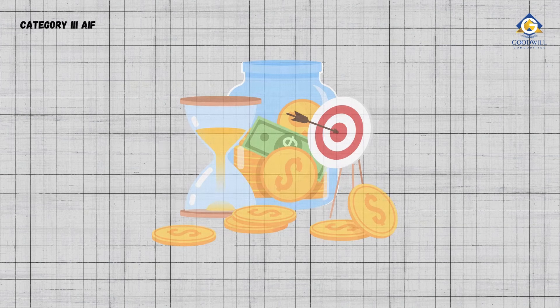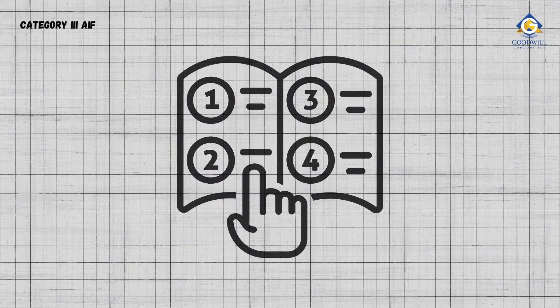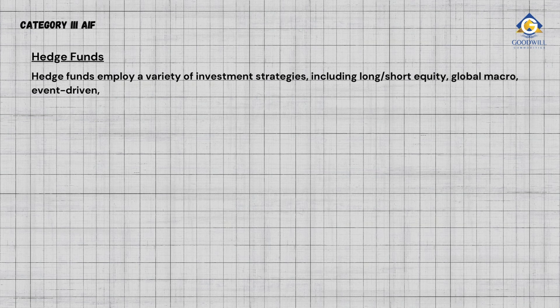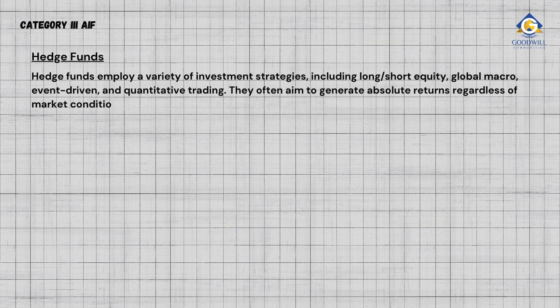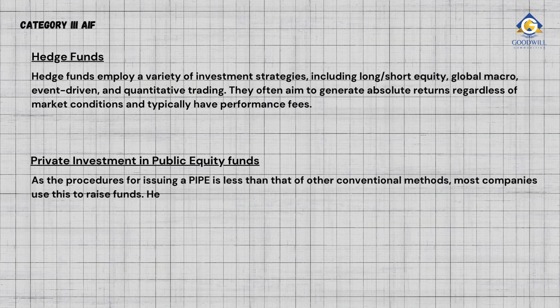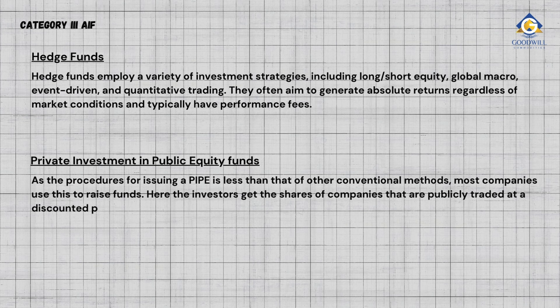Category 3 AIF covers funds that offer short-term investment vehicles for investors. Hedge Funds employ a variety of investment strategies, including long-short equity, global macro, event-driven, and quantitative trading, often aiming to generate absolute returns regardless of market conditions with performance fees. Private Investment in Public Equity (PIPE) funds are used by most companies to raise funds, as the procedure is less complex than conventional methods — here investors get shares of publicly traded companies at a discounted price.